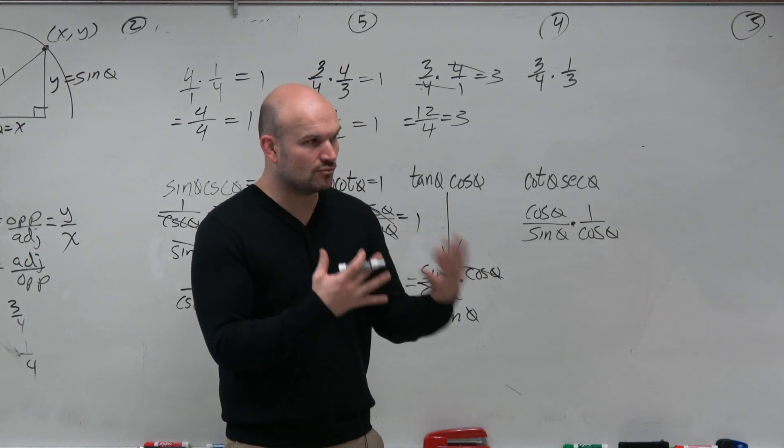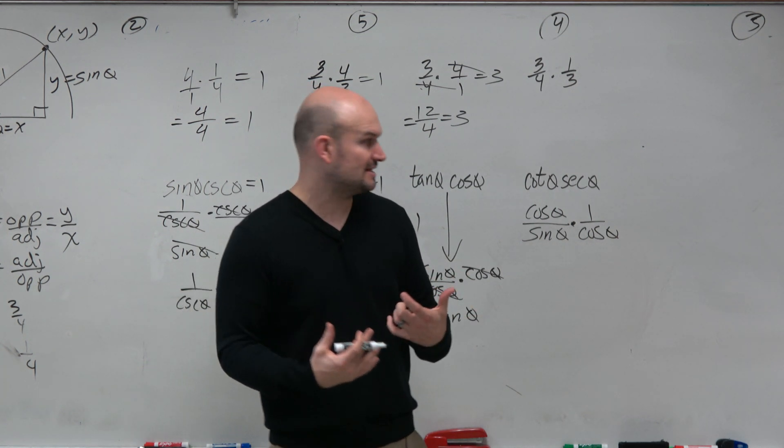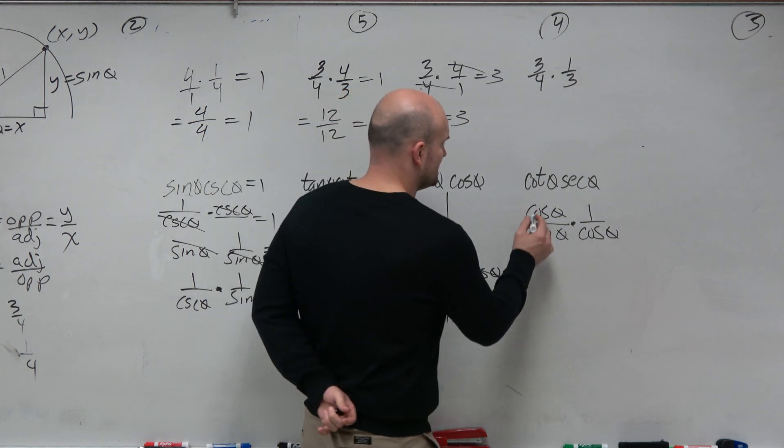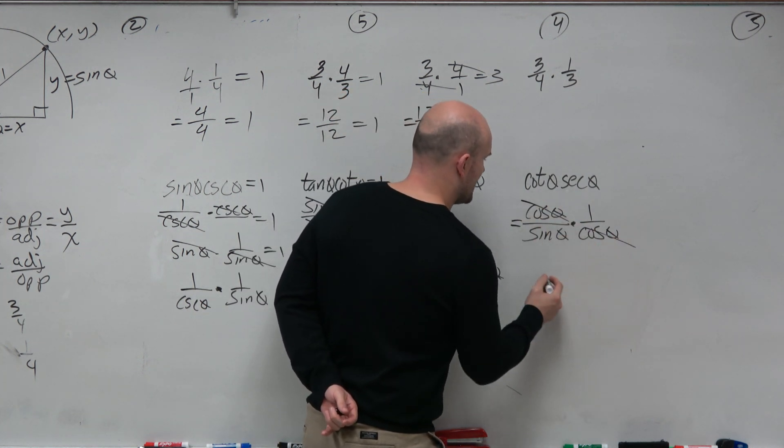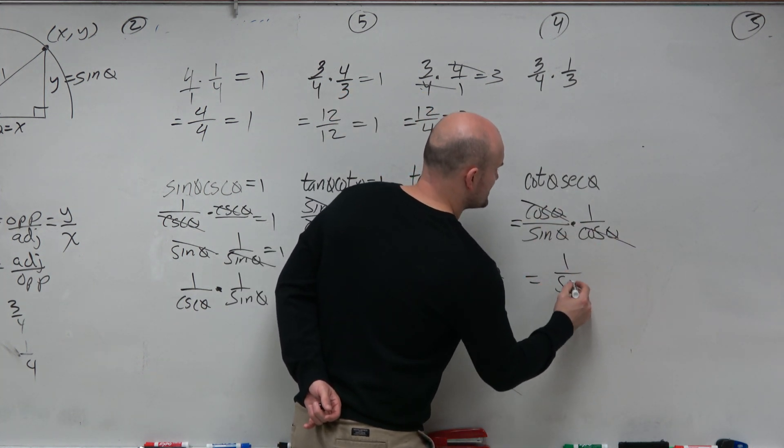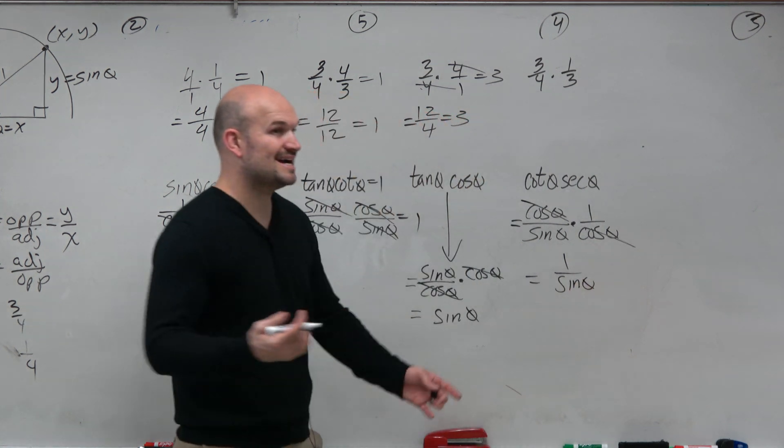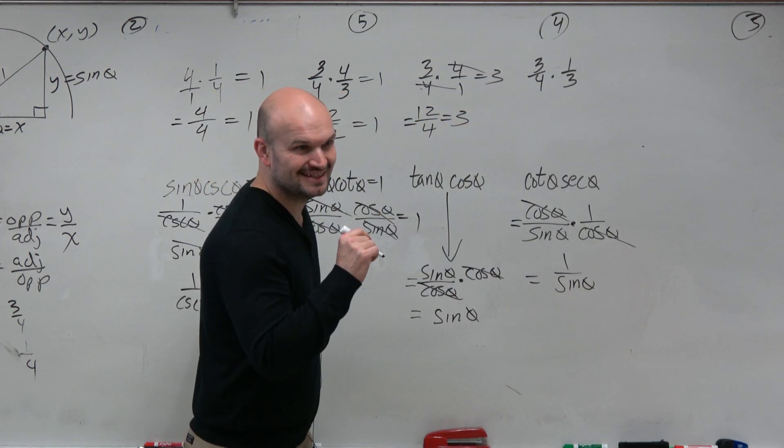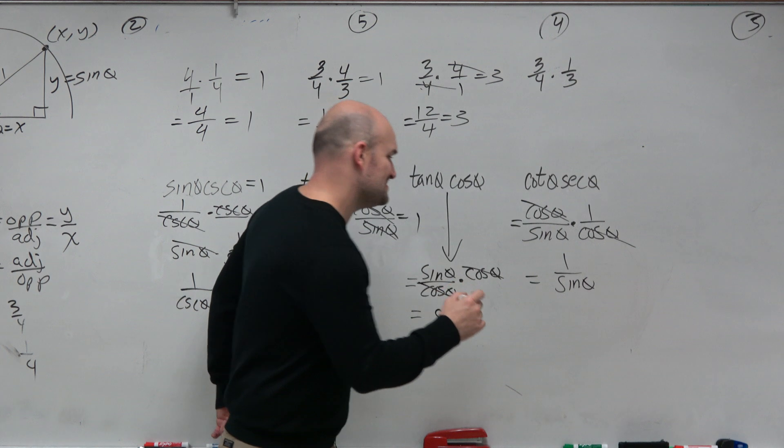There's no right way to always do the problems. You have to practice at these. And here, I see that these cosines divide out. So that leaves me with 1 over sine of theta. And 1 over sine of theta can be simplified to cosecant.